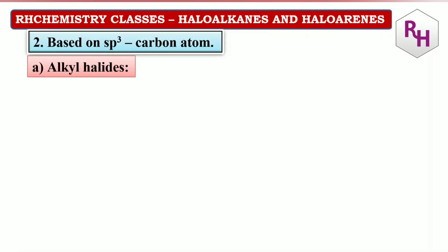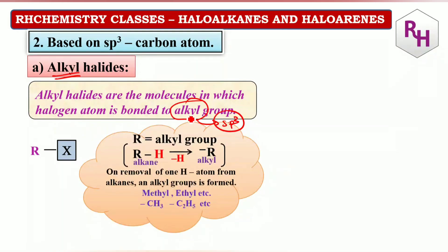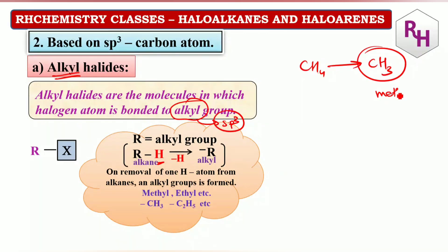Based on SP3 hybridized carbon, the first classification is alkyl halide. Alkyl halides are molecules in which the halogen atom is bonded to an alkyl group — remember, an SP3 hybridized group. The general formula is RX, where R is the alkyl group. From CH4, remove one H to get CH3 — that is methyl. From C2H6, remove one H to get C2H5 — that is ethyl. The alkyl group is the basic part of the R group.